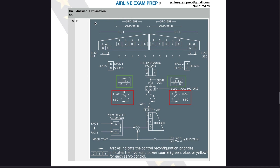Looking at the architecture diagram available in the FCOM flight controls section, these are the flight control surfaces — wings, elevators, and rudder — along with the different systems which control them. The green box refers to your left and right elevators. The red box refers to the flight control computers. These computers control the elevator with the help of the hydraulic system. In this scenario, the question refers to the left elevator. In a normal situation, ELAC-2 controls the left elevator.